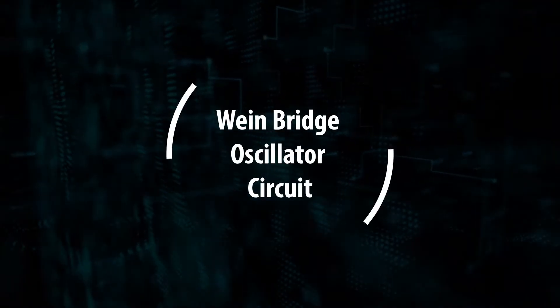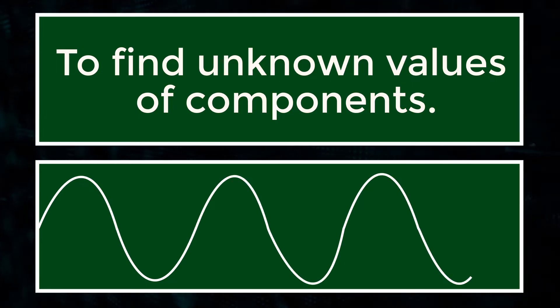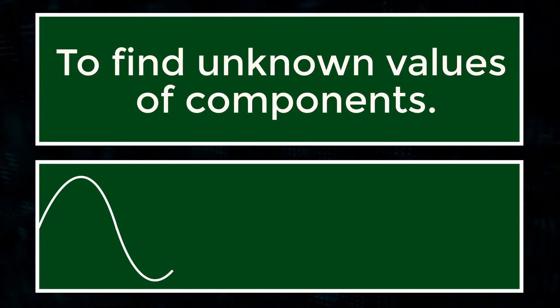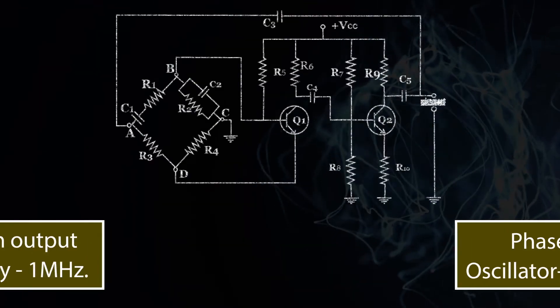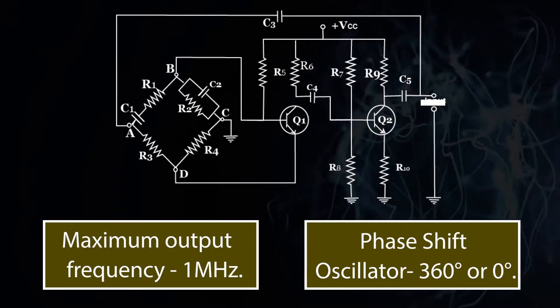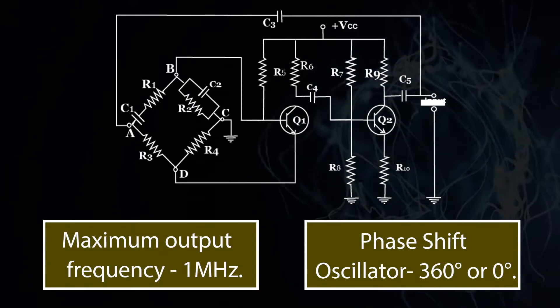Wein Bridge Oscillator Circuit: The Wein Bridge Oscillator is used to find unknown values of components. In most cases this oscillator is used in audio applications. The oscillators are designed simply, size is compressed, and it has stable frequency output.